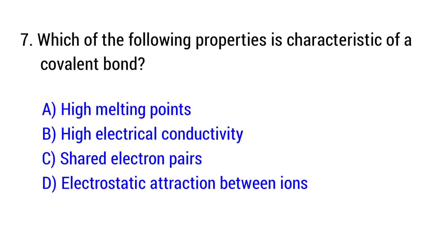Question number 7. Which of the following properties is characteristic of a covalent bond? The right answer is option C, shared electron pairs.